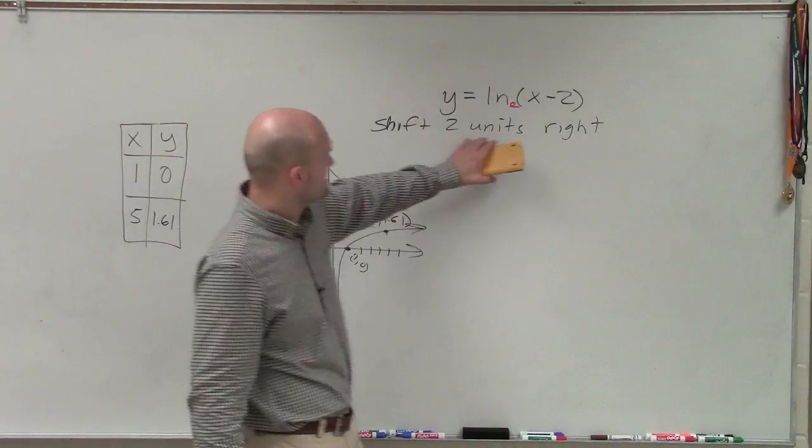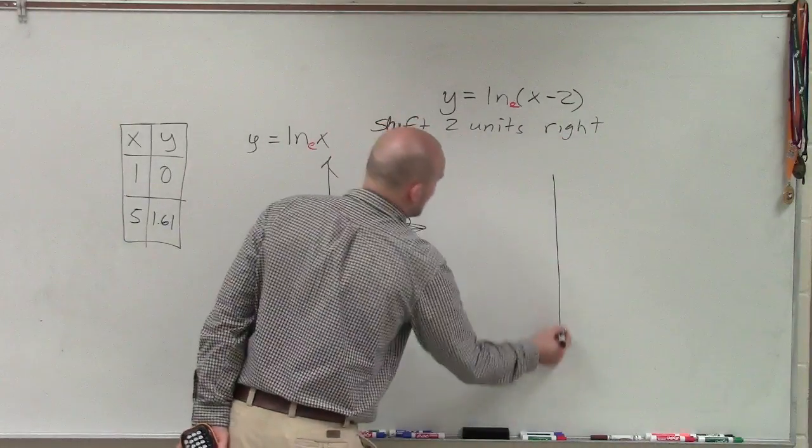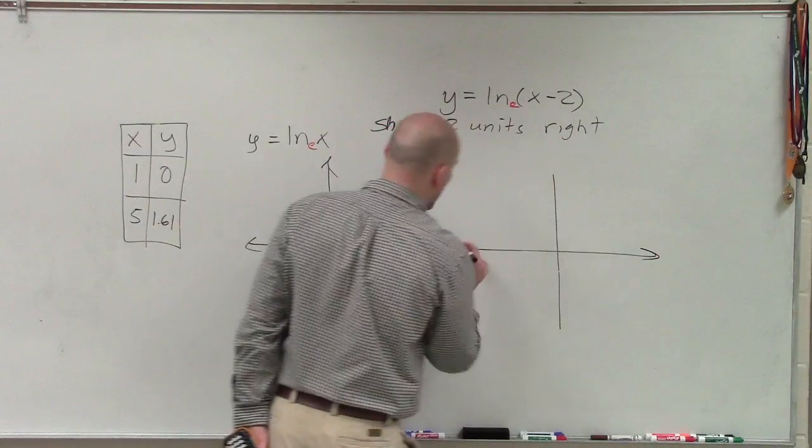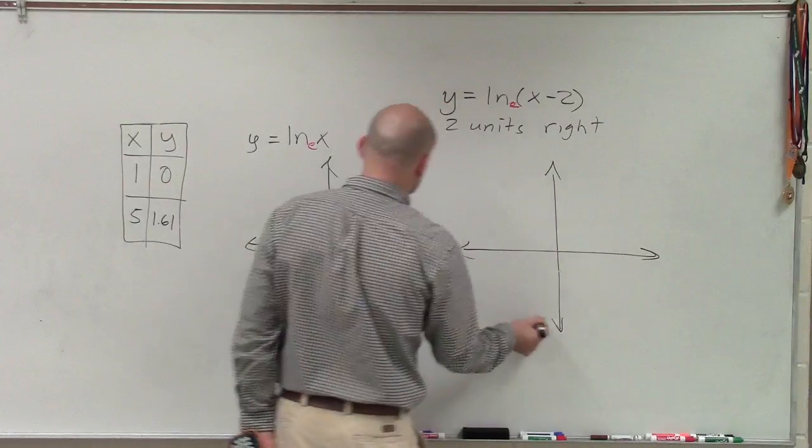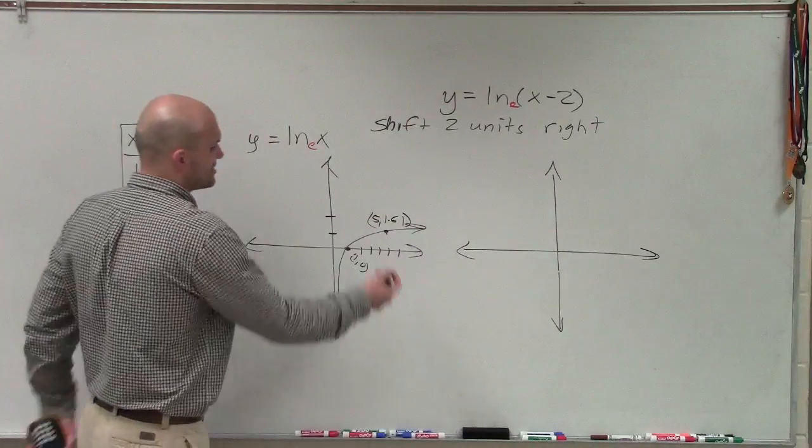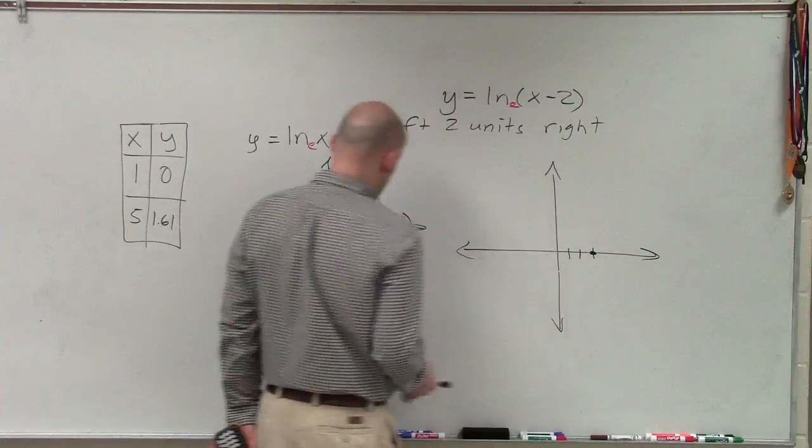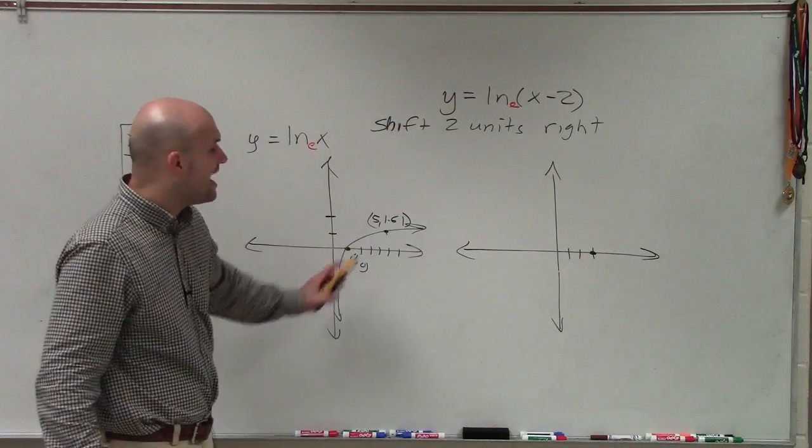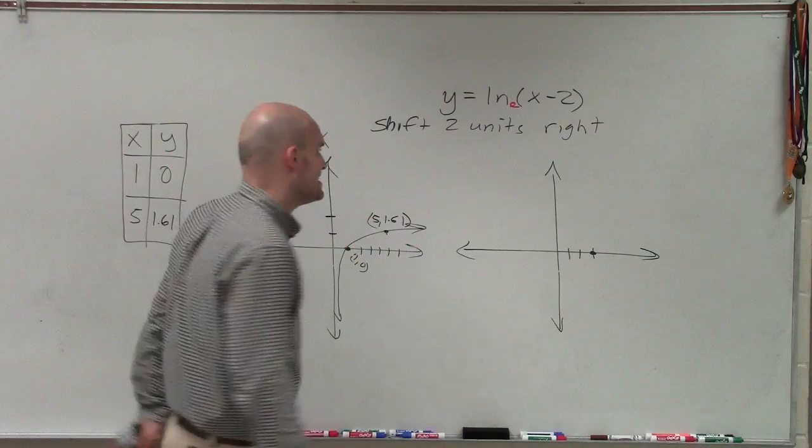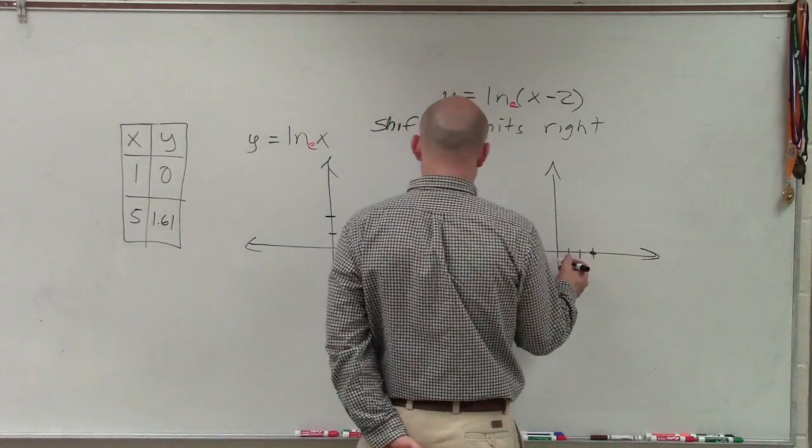However, what I notice is I'm going to be shifting my graph two units to the right. So that's not going to affect my y values, but it is going to affect my x value. So now, instead of the graph crossing at 1 comma 0, it's now going to cross at 3 comma 0. And instead of the graph having another point at 5 comma 1.61, it's now going to have a point at 7, 1.61.